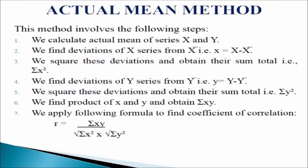Actual mean method: this method involves the following steps. First, we calculate the actual mean of series X and series Y. Then we find the deviation of X series from the arithmetic mean, that is x = X minus arithmetic mean. Next we square these deviations and obtain their sum total, that is sigma x-squared. Then we find the deviation of Y series, y = Y minus arithmetic mean, and square these deviations to get sigma y-squared. We find the product of x and y to obtain sigma xy, and lastly apply the formula: r = sigma xy divided by the square root of (sigma x-squared multiplied by sigma y-squared).